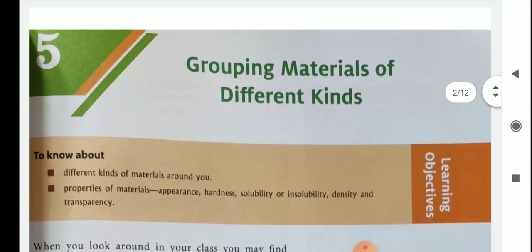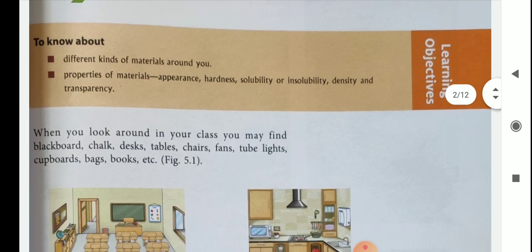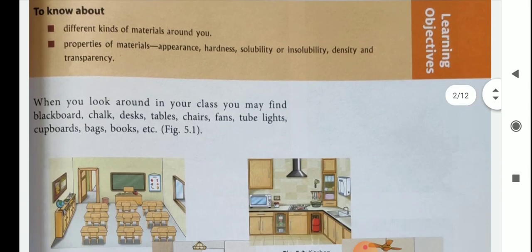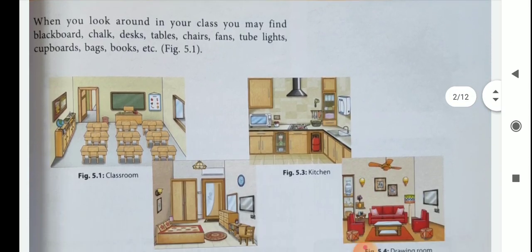In this chapter we will discuss about different kinds of materials around us and properties of materials: appearance, hardness, solubility, insolubility, density, and transparency. So let's see this chapter.